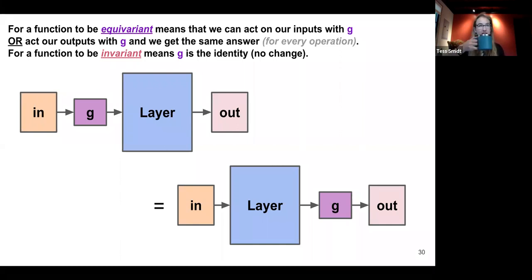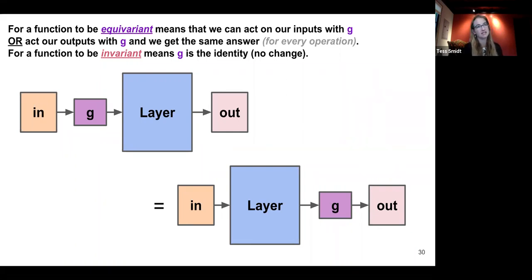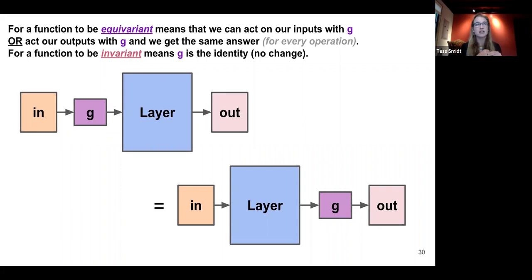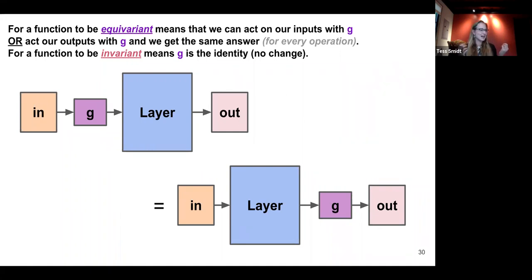For an invariant function, G is the identity — the inputs to that function are invariant quantities, and the outputs are also invariant quantities. Question: why limit yourself to equivariant functions rather than more general functions? One reason is that you can substantially shrink the space of functions you're searching over. If I know my data has Euclidean symmetry, I could do data augmentation, or I could have a model that inherently respects those operations. All equivariant functions form a much smaller space than all learnable functions — and physics lives only in equivariant functions. All physical phenomena are equivariant operations.